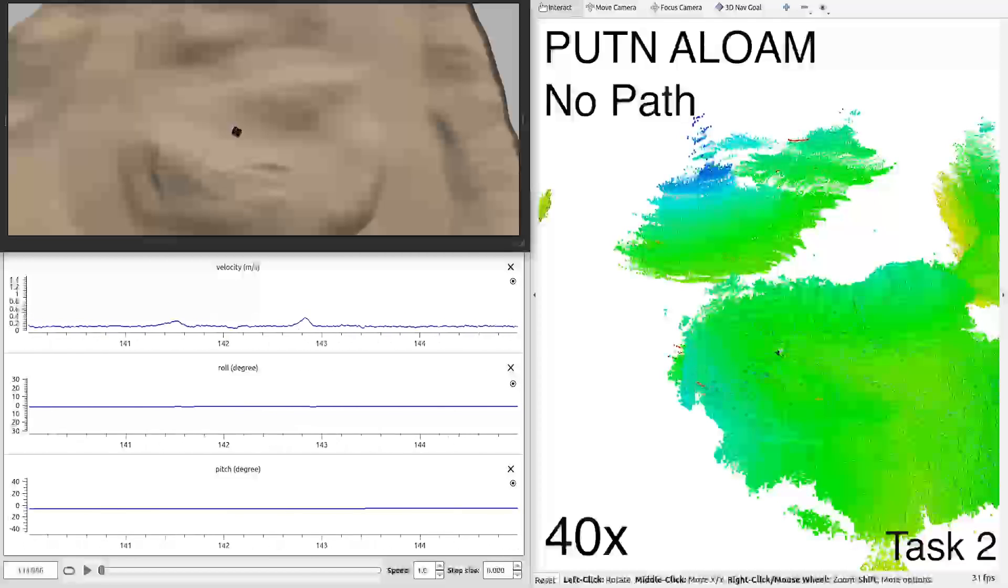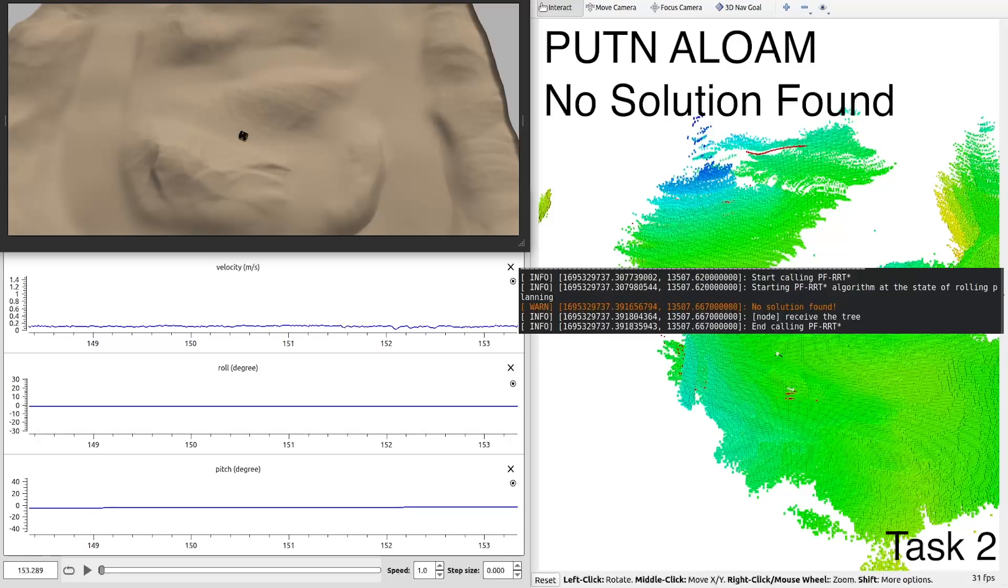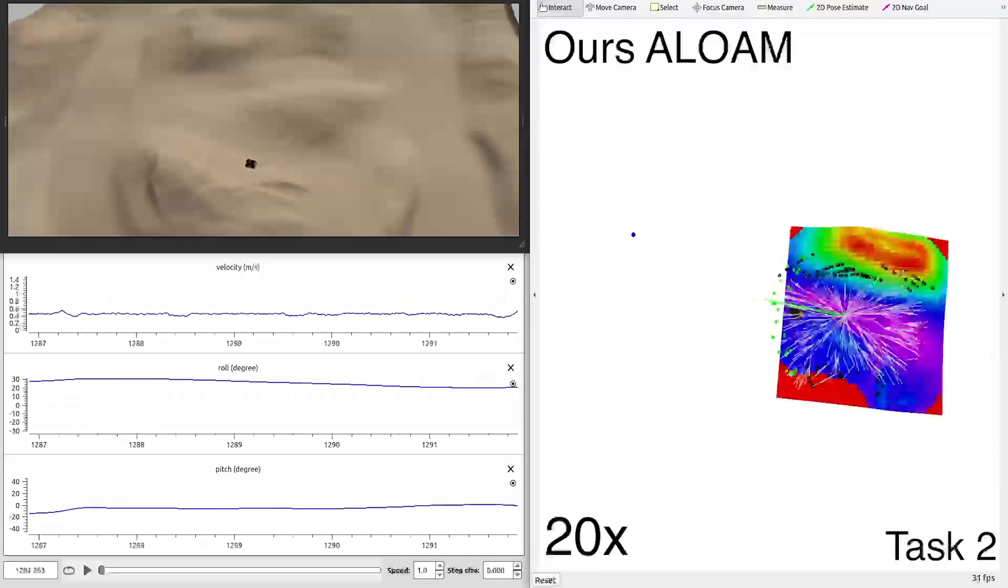PUTIN can no longer plan a path and after 2 minutes, the algorithm declares no solution found. Here is our algorithm completing the same task.